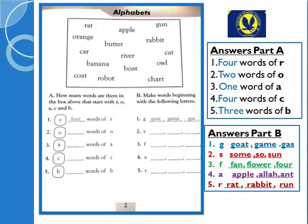Part B mein hai: make words beginning with the following letters. Ab aapne baccho in letters ke saath start hone wale words likhne hain — aap koi bhi likh sakte ho. Jaise G ke saath goat, game, gas, gun. S ke saath sum, so, sun. F ke saath fan, flower, four, far. A ke saath apple, allah, aunt, aeroplane. R ke saath red, river, rabbit, run. Ye words ke ilawa bhi aap likh sakte ho — bas is letter ke saath start hona chahiye.